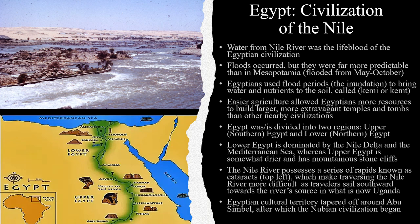Egypt was divided into two regions: Upper Southern Egypt and Lower Northern Egypt, seen here on this map. It can be confusing to some people because Lower Egypt is in the North and Upper Egypt is in the South, if you're using a North-oriented map. Lower Egypt is dominated by the Nile Delta region, as the Nile River widens and dumps into the Mediterranean Sea. Upper Egypt is significantly drier and possesses stone cliffs close to the riverbanks. The Nile River also possesses a series of rapids called cataracts, which make traversing the Nile River more difficult as travelers sail southward upriver towards the source of the Nile River in what is now present-day Uganda.